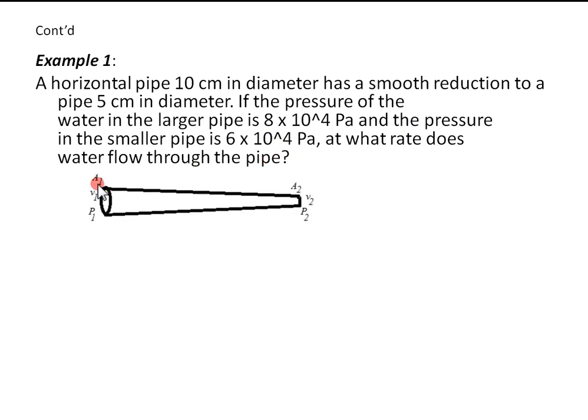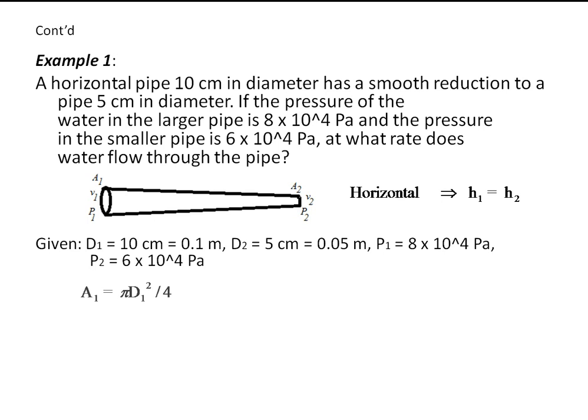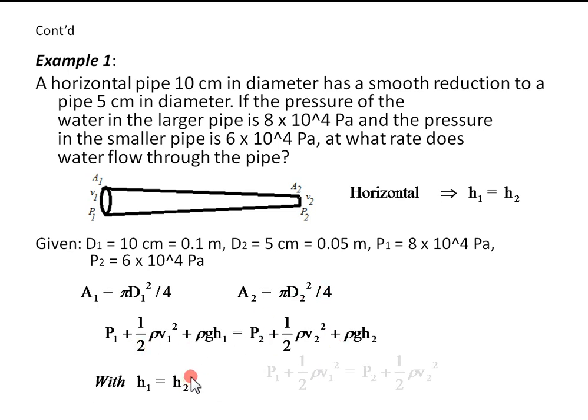This is a horizontal pipe. I labeled this as 1 and this as 2. Horizontal pipe, H1 and H2 are equal. Given these quantities, we calculate area 1 as pi D1 squared over 4, area 2 as pi D2 squared over 4. Writing Bernoulli's equation with H1 equals H2, we have P1 plus half rho V1 squared equals P2 plus half rho V2 squared.